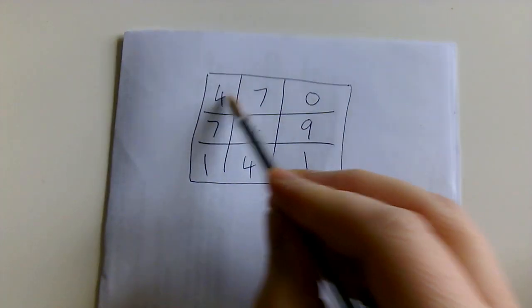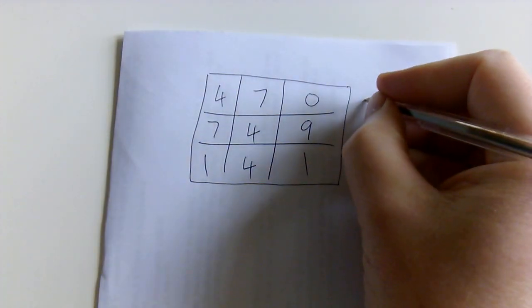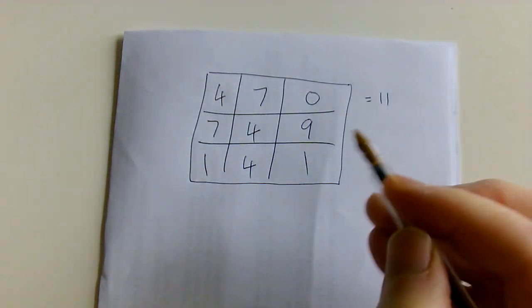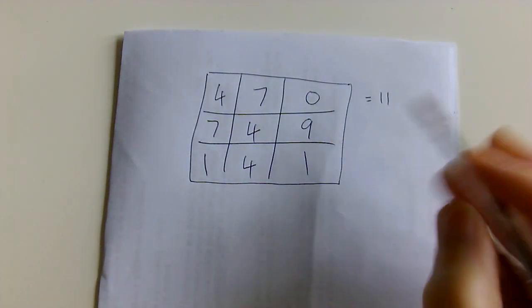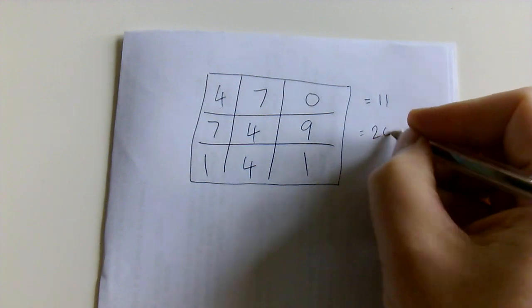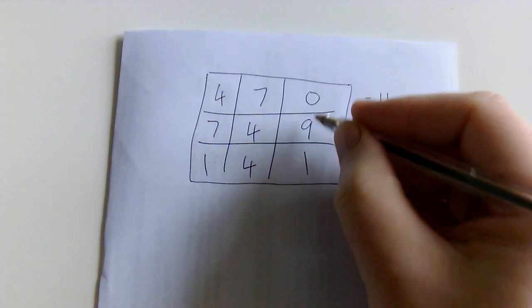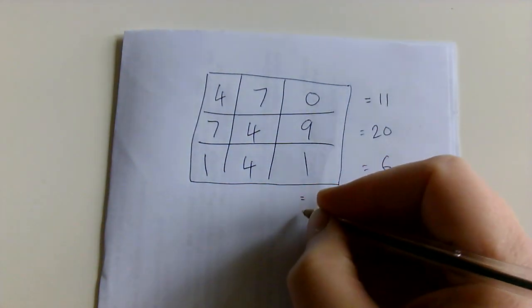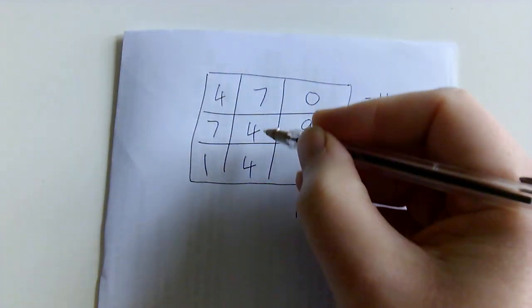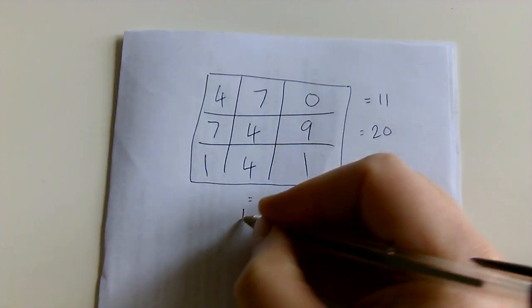We add them up. So 4 and 7 and 0 comes to 11. 7 and 4 is 11, and 9 is 20. 1 and 4 and 1 is 6. 0 and 9 and 1 equals 10.